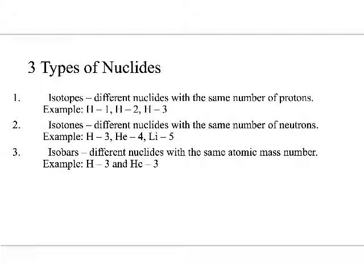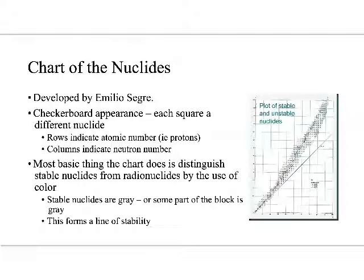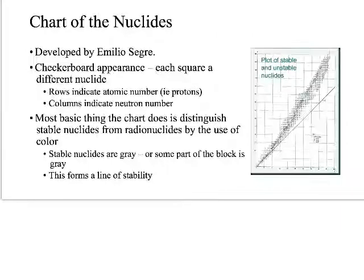Isobars you just kind of have to memorize. These are different nuclides with the same atomic mass number. One way to memorize that is imagining it like a weightlifting bar — they have the same weight, roughly.